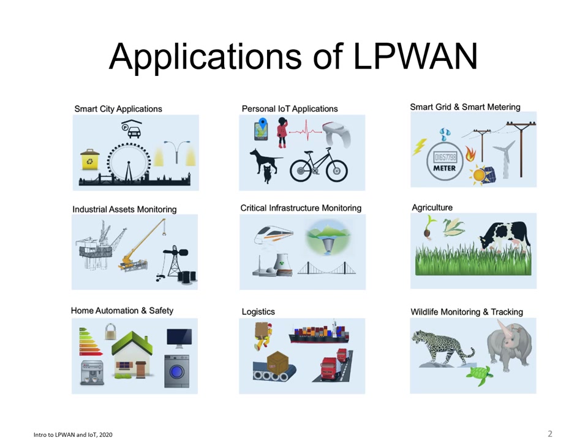Low Power Wide Area Networks, or LPWAN, are networks that specialize in connecting remote things that are mobile and are not usually connected to the permanent grid. Examples include livestock and agriculture. If you put a sensor in a field, it is highly unlikely that you will have a permanent connected power, and you would like a sensor with a very long communication range and very low power consumption.